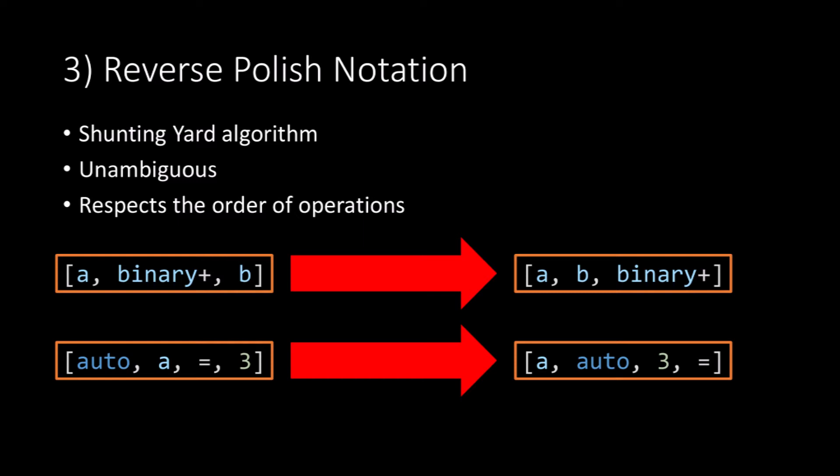The shunting yard algorithm is well defined for maths equations. However, in code there are lots of non-maths things. In B code there are things such as auto, if, else, while, return, brackets, semicolons, commas - all of these are non-maths. However, we can treat them as maths functions.